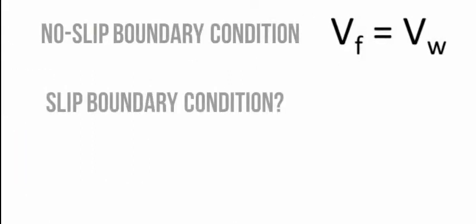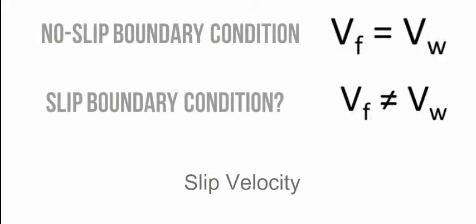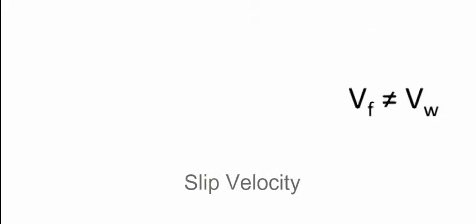Then what is slip boundary condition? It's simply the condition where fluid velocity differs from wall velocity. The difference is called slip velocity.